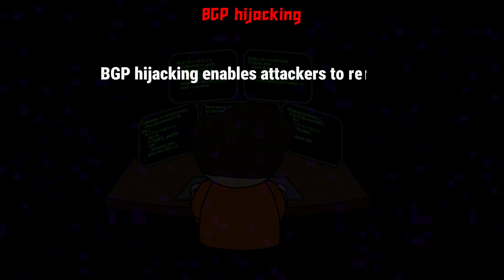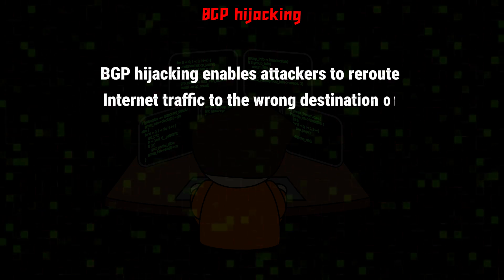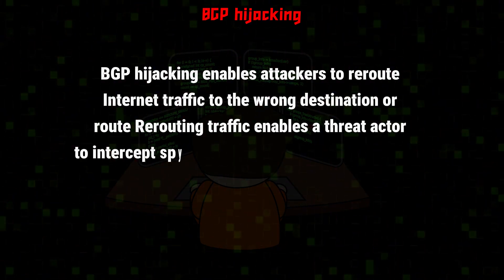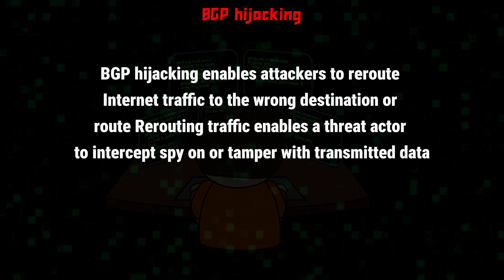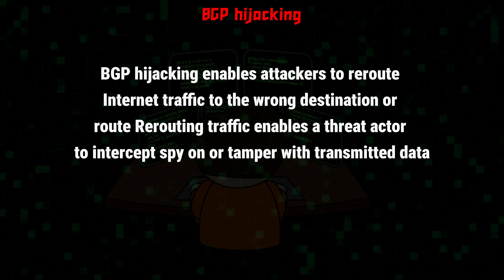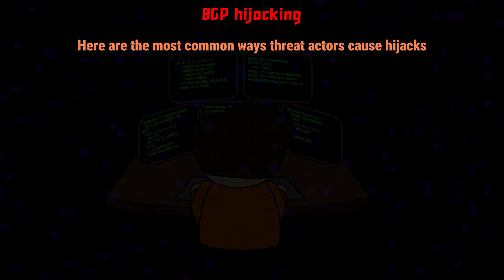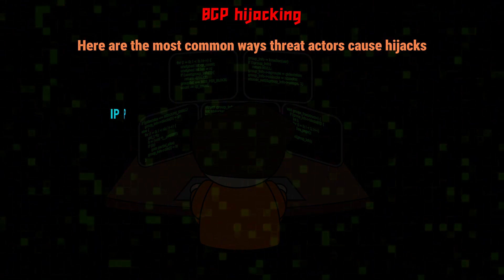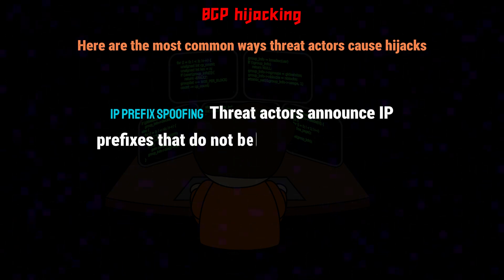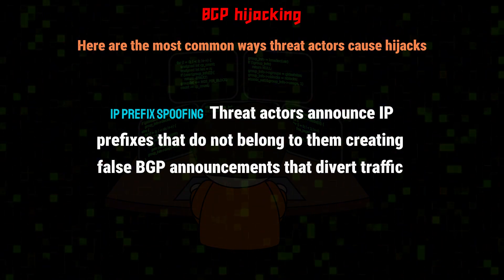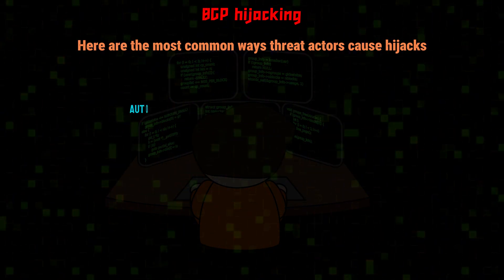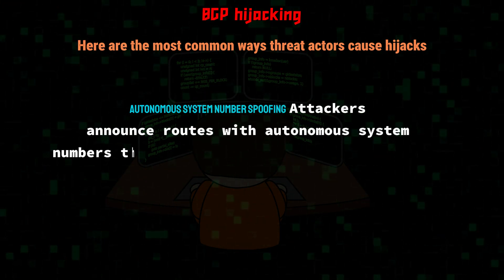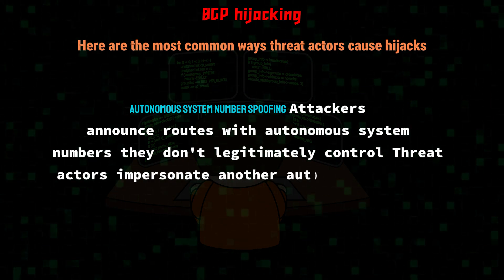BGP hijacking enables attackers to reroute internet traffic to the wrong destination or route. Rerouting traffic enables a threat actor to intercept, spy on, or tamper with transmitted data. Intentional BGP hijacks are less common but more dangerous since there is a clear malicious goal behind the attack. Here are the most common ways threat actors cause hijacks. IP prefix spoofing: threat actors announce IP prefixes that do not belong to them, creating false BGP announcements that divert traffic to or through their own network.